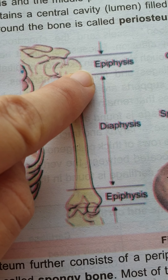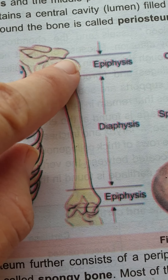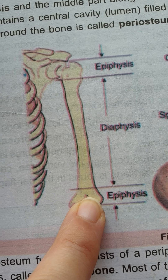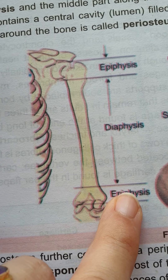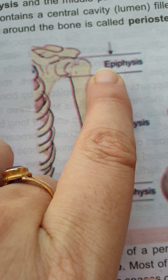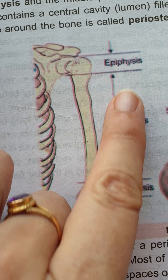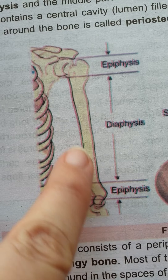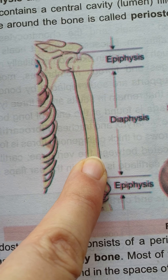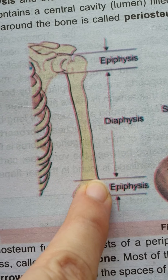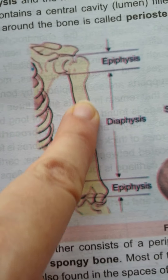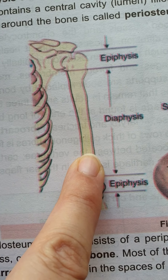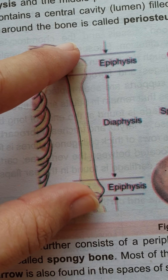Human bones externally have two parts. Most bones have an upper and lower broad portion, and these broad portions are known as epiphysis. In the middle there is a shaft, or diaphysis — this middle portion is known as the diaphysis or shaft. This is the external structure of the bone.